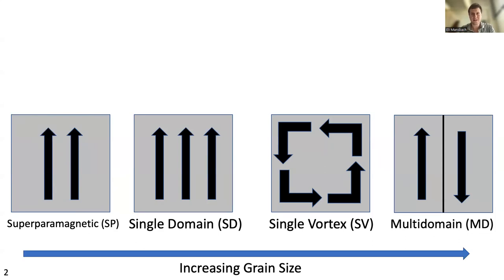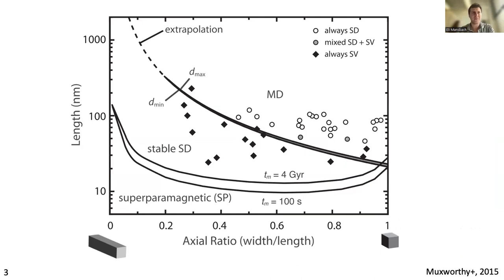However, if our grains are smaller than single domain or too large to be single vortex, then they might be in either the superparamagnetic state or the multidomain state. The superparamagnetic state is not good since it has very short viscous relaxation times relative to laboratory timescales, so they can't retain a magnetization. And multidomain carriers tend to be very bad since they're often easily remagnetized, and we cannot recover accurate paleointensities from them.